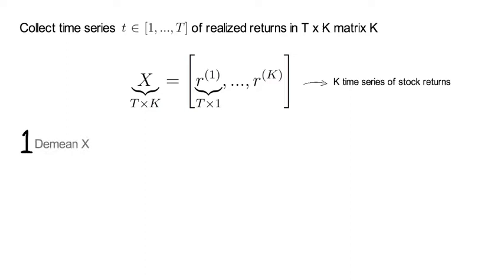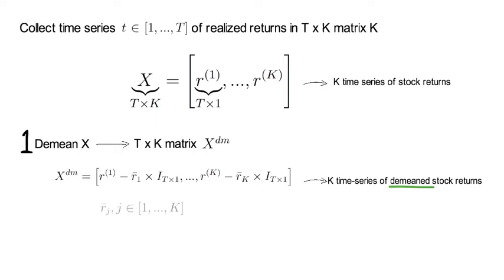First we're going to demean X and call the resulting T times K matrix X^dm, where dm stands for demeaned. Note that r_j upper bar for any j element 1 to K is simply the sample mean of stock j's return, and the i index t times 1 is just a column vector with ones of dimension T times 1.